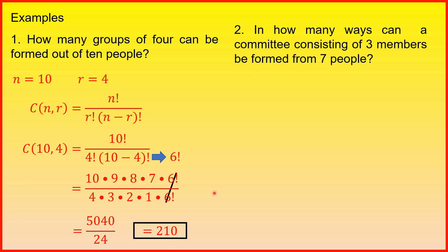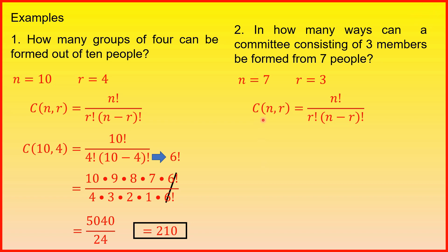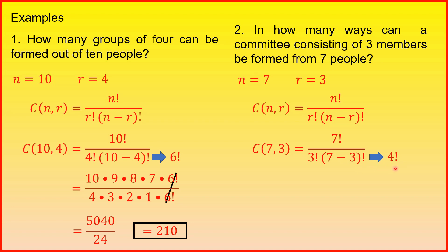Guys, let's have example number 2. In how many ways can a committee consisting of 3 members be formed from 7 people? So, identify natin muli ang value ng N saka value ng R. Ang N natin is 7, at ang R naman natin ay 3. Then, using the formula, substitute na natin yung mga given values: C(7, 3) equals 7 factorial over 3 factorial times the quantity of 7 minus 3 factorial. Itong 7 minus 3 is equal to 4, and that is 4 factorial.